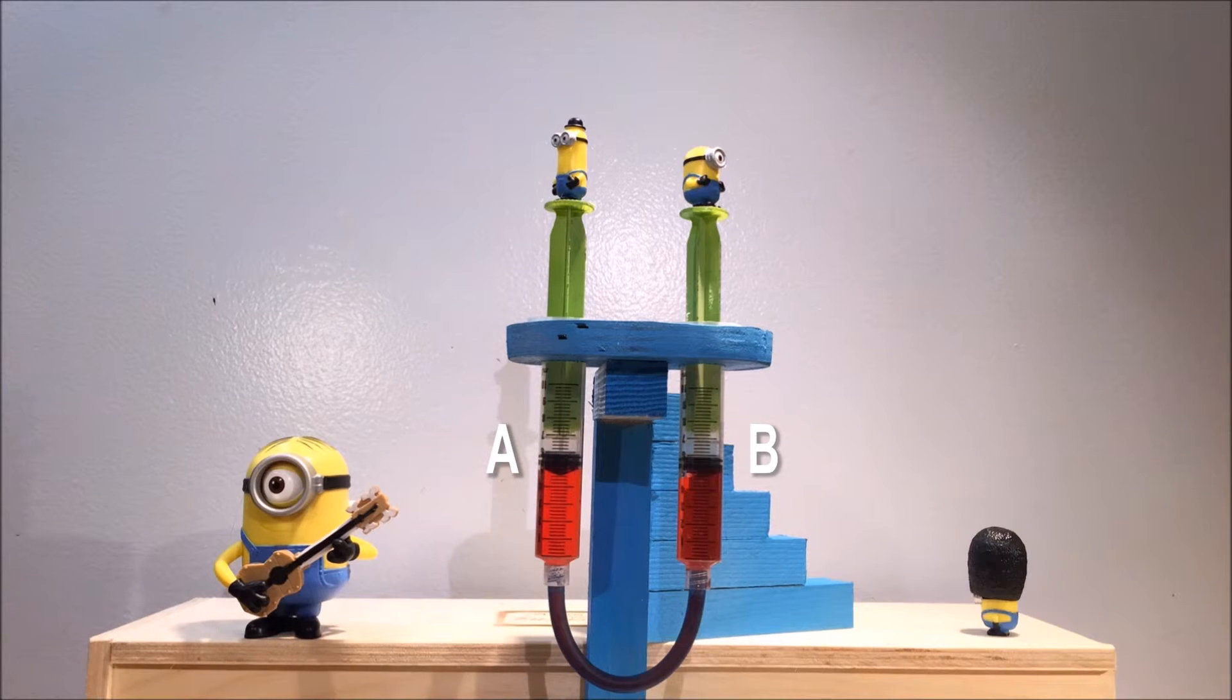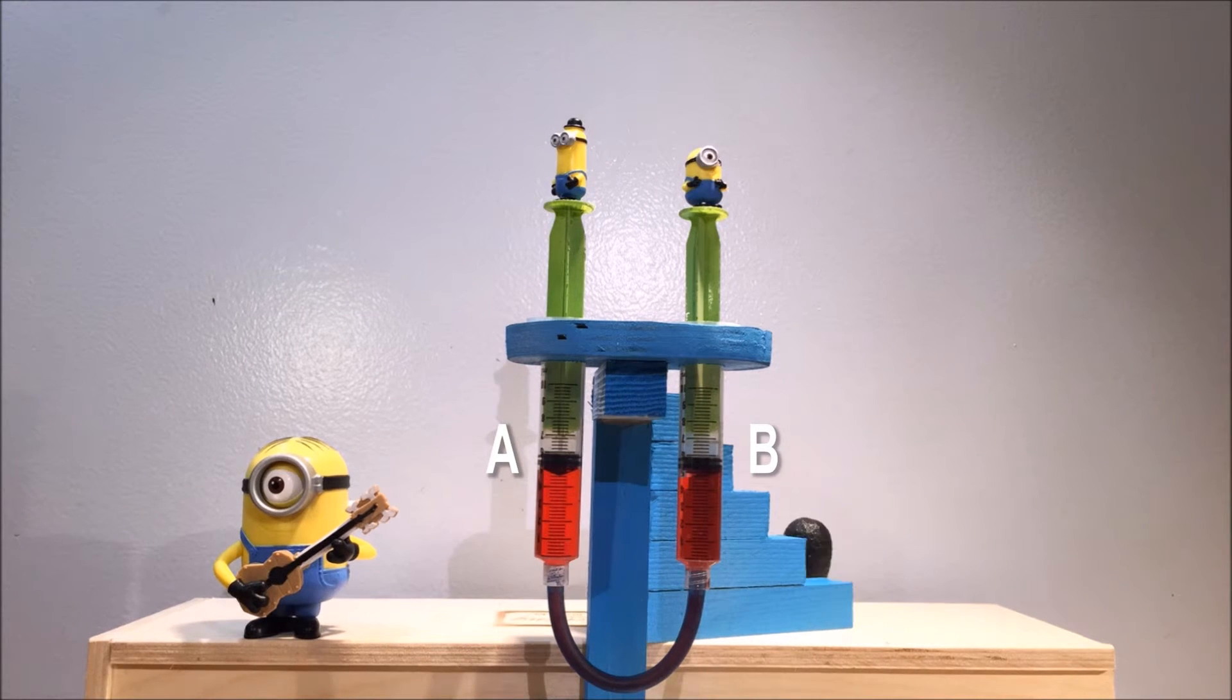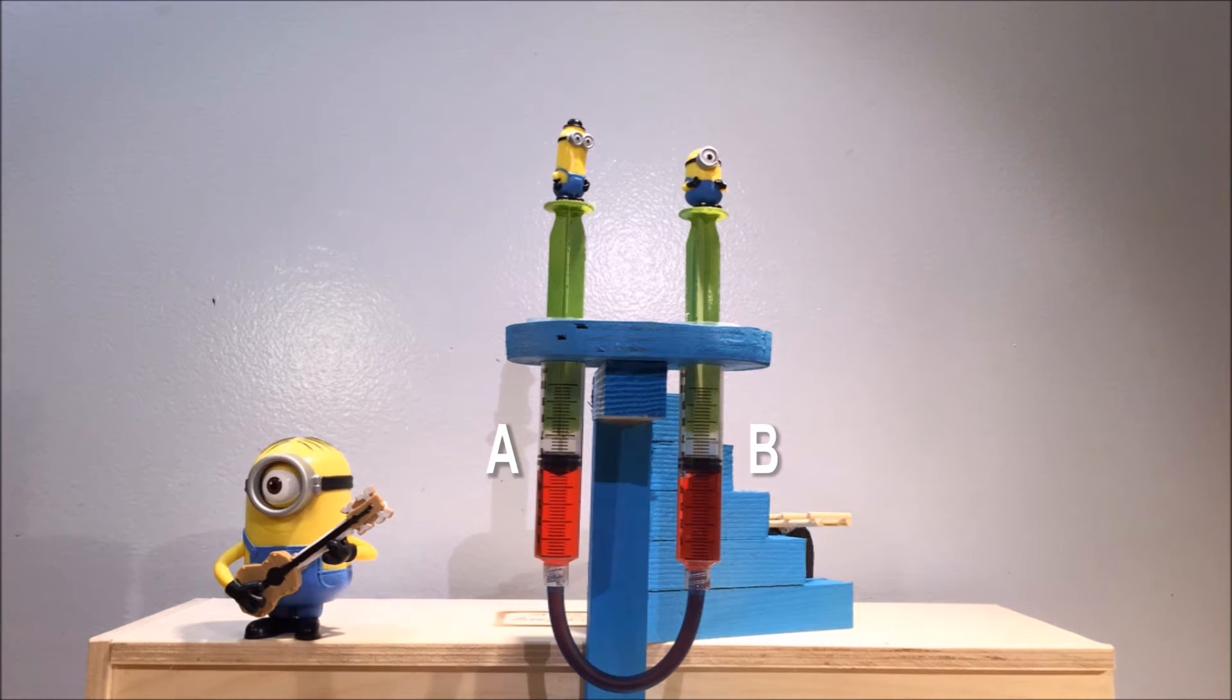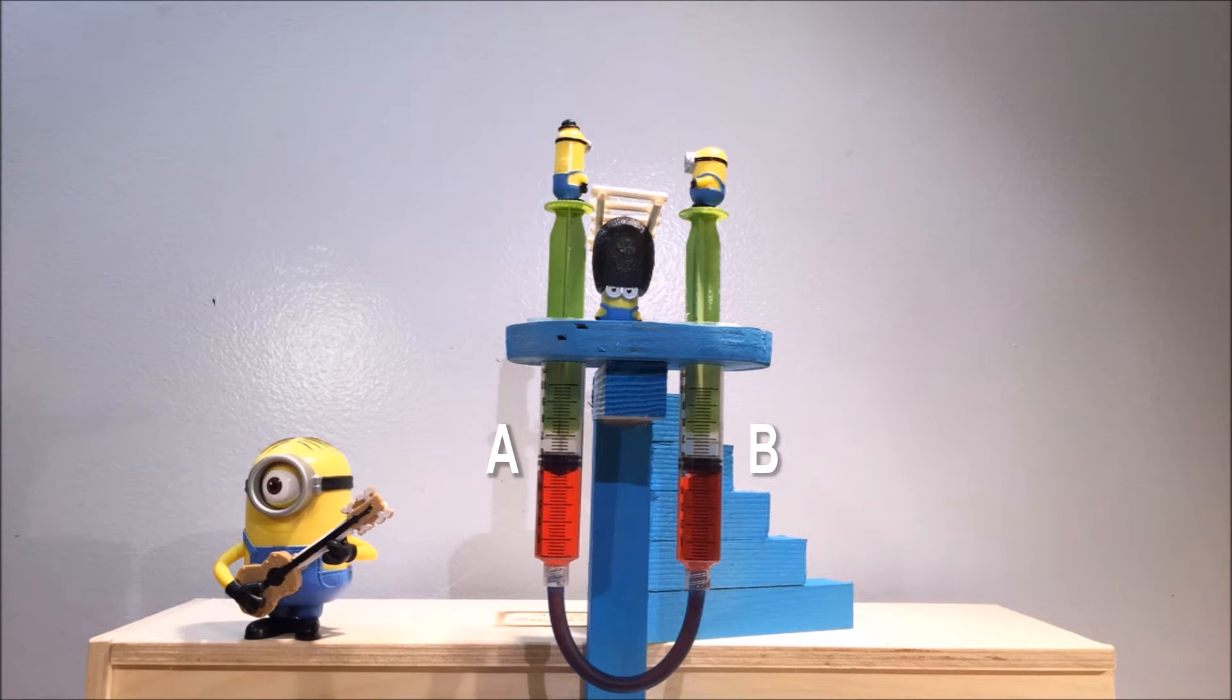Right. When Kevin jumps on top of Piston A, both pistons stop because now Kevin is pushing down on Piston A with the same amount of force that Stewart is pushing down on Piston B. This makes the system balanced.